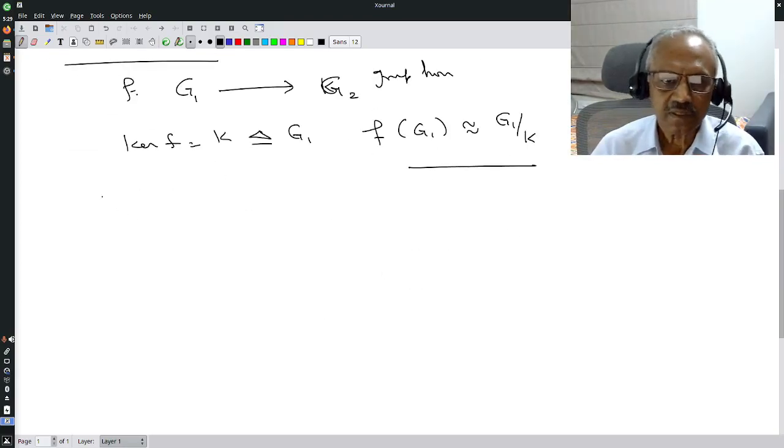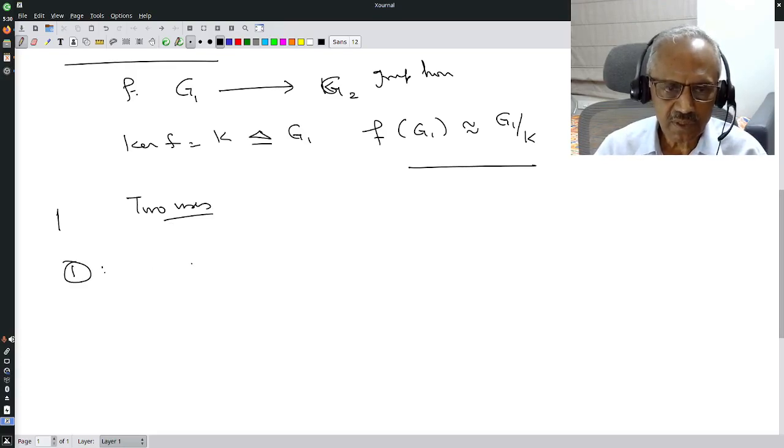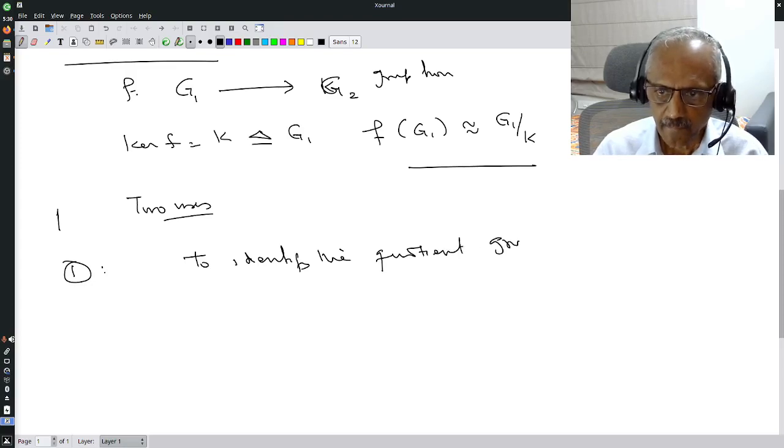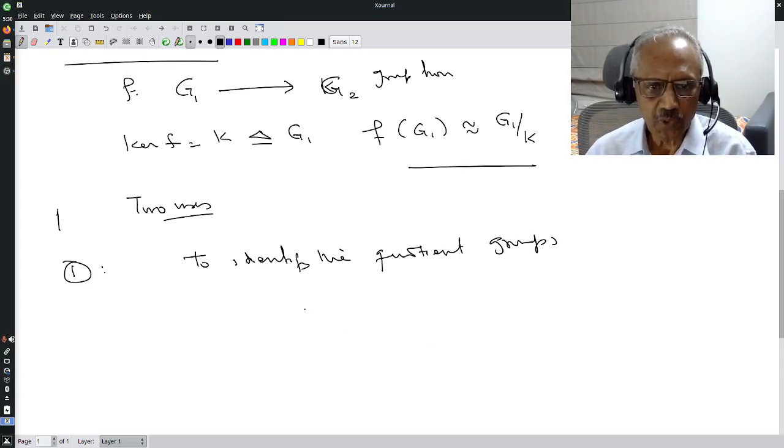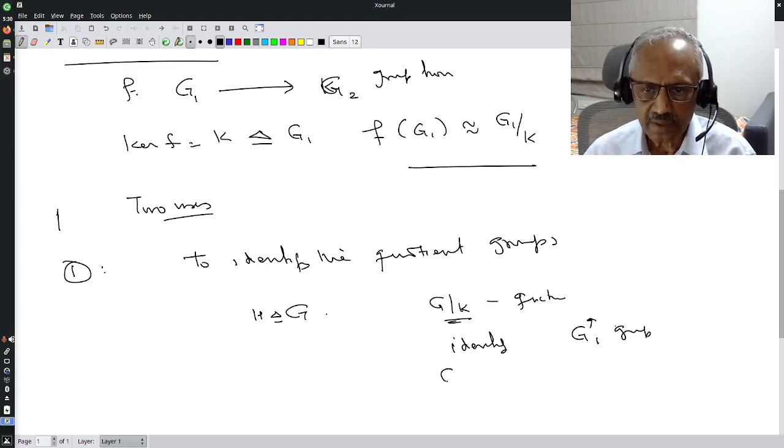So what is the use? We are going to talk about two uses, but today we will talk about the first use. First use is it allows us to identify the quotient groups. What does it mean? Suppose G is a group, H is a normal subgroup, then we know we can form the quotient group. But we want to identify. What do I mean by identify? That means I have to find another group G₁ such that G mod K is isomorphic to G₁.